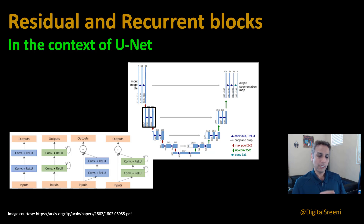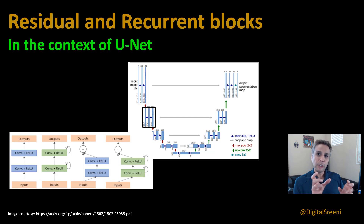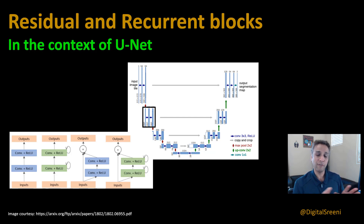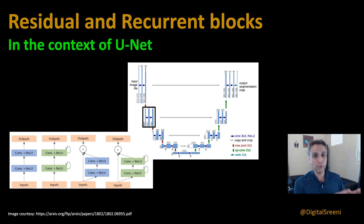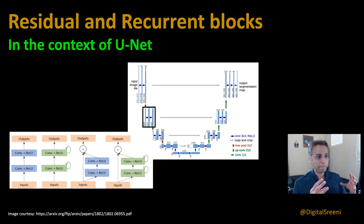Now in this video, I'm going to talk about residual and recurrent neural networks — in fact, residual and recurrent blocks that you can use to define a neural network. We are going to look at this in the context of U-Net. So if you've ever heard the term R2 unit, which is a residual recurrent unit, then you're watching the right video.